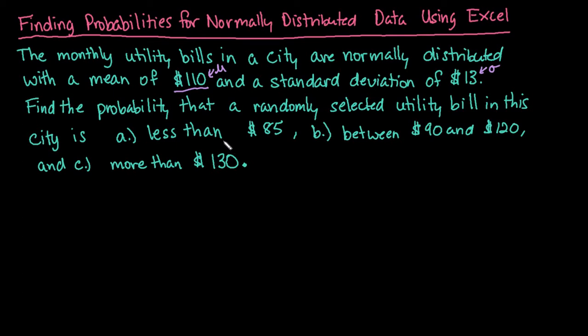We're going to find the probability of three different situations. First, we'll find the probability that a randomly selected utility bill is less than $85, so the probability that X is less than 85.